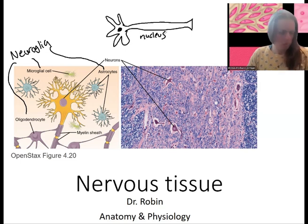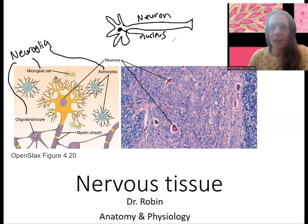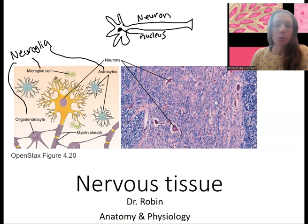Neurons are very important for sending electrical messages and communicating with the rest of the brain and the rest of the body. We'll talk a lot more about them.